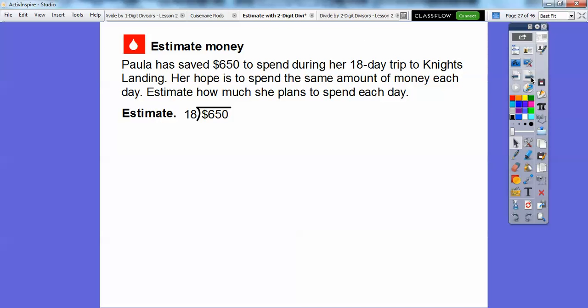So here's another one. Paula has saved $650 to spend during her 18-day trip to Knight's Landing. Her hope is to spend the same amount of money each day. Estimate how much money she plans to spend each day. So we're going to estimate on this one, 18 divided into $650. So 18 is close to a nice round number. Think of 20. And think of this, 6 divided by 2 would be 3. So 600 divided by 20 would be 30 right there. So 20 is going to go into that one right there.